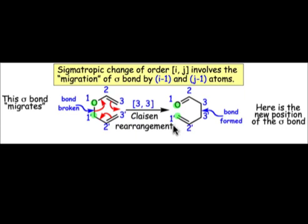Where does that σ bond migrate to? If we look, these CH2 groups initially were unconnected in the reactant, but now they're connected in the product, so the migration must go toward the positions that are labeled 3 and 3'. Where do those labels come from?